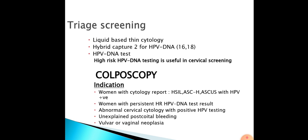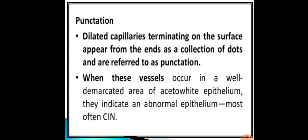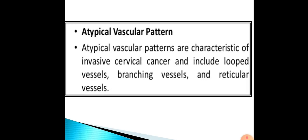Abnormal colposcopy findings include: white epithelium (leukoplakia), aceto-white epithelium seen when 2–5% acetic acid is applied to the cervix, punctation, mosaicism, and atypical blood vessels. Punctation refers to dilated capillaries terminating on the surface, appearing as a collection of dots in a well-demarcated area of aceto-white epithelium. Atypical vascular patterns — including looped, branching, and reticular vessels — are characteristic of invasive cervical cancer.